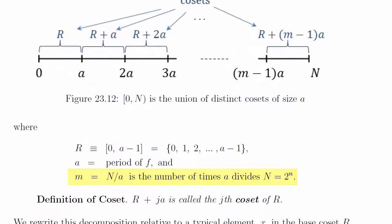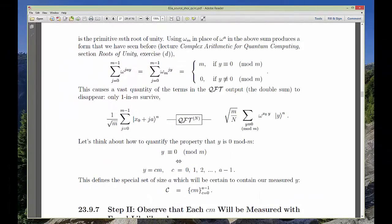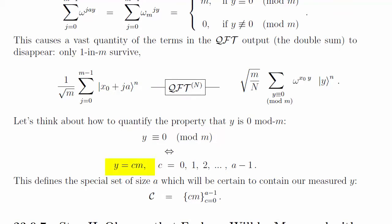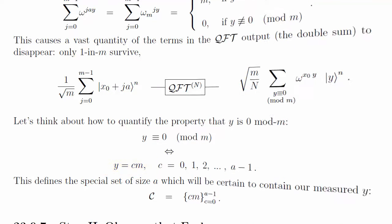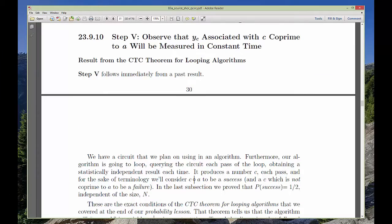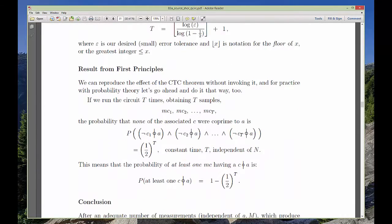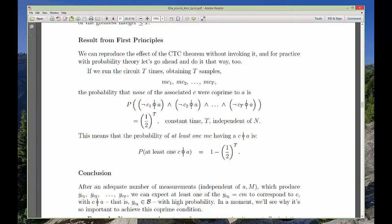There are a couple details I left out, because that multiple of m that we measure, cm, doesn't always work. We have to invoke probability theory to prove that with a constant time number of repetitions of this process, we'll eventually get a cm that does do the job.